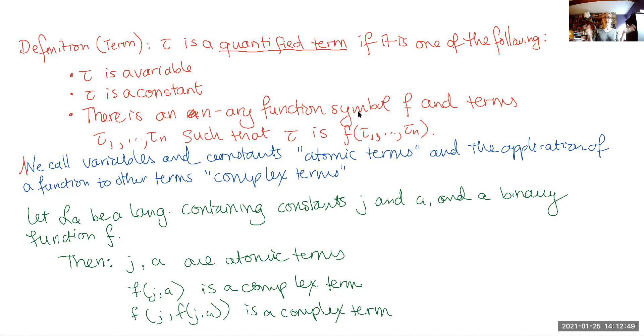That's basically it. We've got basic terms or the atomic terms, which are just the variables and the constants. Then you've got complex terms, which are formed out of either atomic terms or other complex terms.